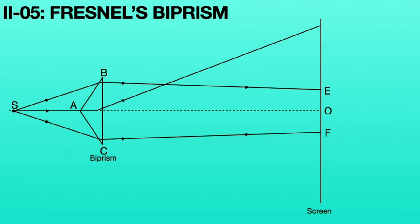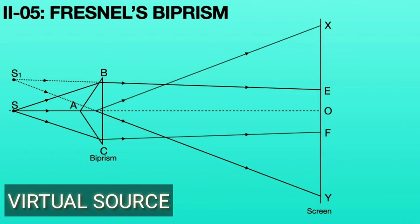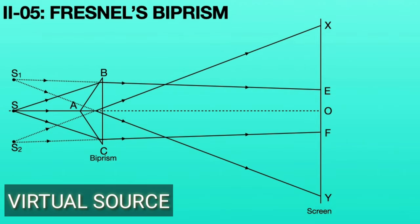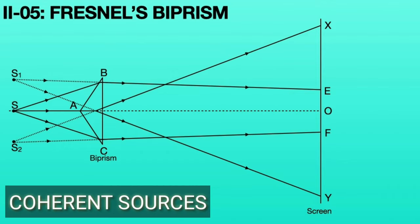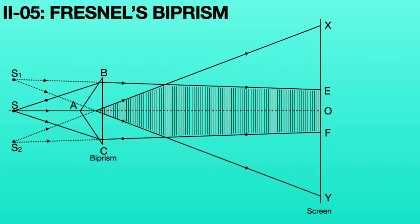One light ray travels and is incident on the screen as ray AX. Another light ray travels and is incident on the screen as ray AY. If we extend the BE light ray and AY light ray to the back, they appear to emerge from virtual source S1. These S1 and S2 virtual sources act as coherent sources. These two coherent sources superpose on each other and form interference fringes on the screen in the field of AEOF.